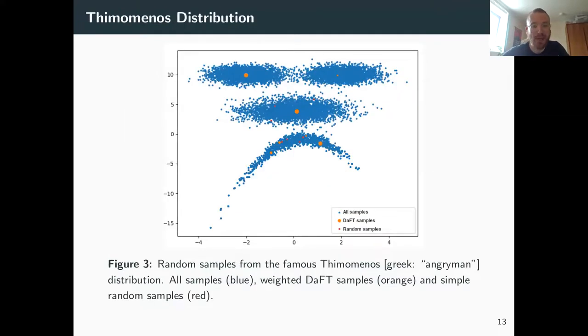And here we have the angry man distribution, or Thimomenos, it sounds a little bit more professional in Greek, where the blue samples is a lot of samples from these disjoint multimodal distributions. And as you can see, I don't know if you can see, but the red dots here, they are just simple random samples, and because we choose so few they completely miss out on the eyes out here. There's no samples from up here.